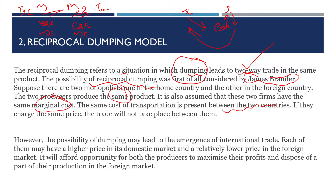If both monopolists charge the same price, trade will not take place between them. So under identical pricing conditions, there is no incentive for trade. However, the possibility of dumping may lead to the emergence of international trade.